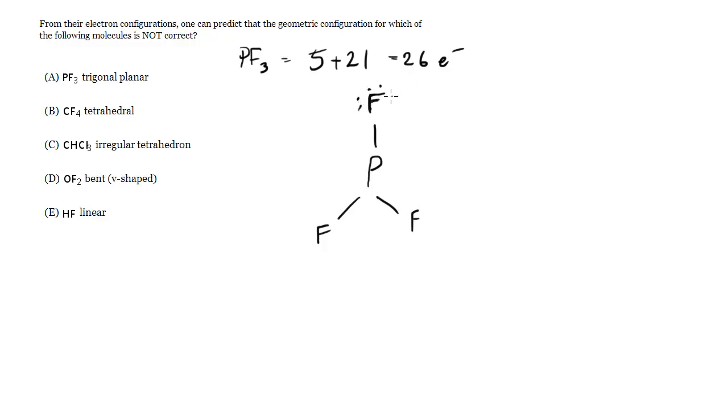Let's complete the octets of the Fs. So 6 around each of those and then P needs 2 more to complete its octet. Now let's confirm we've got the right number of electrons. We've got 6 here, 6 and 6 is 18, 2 more is 20.